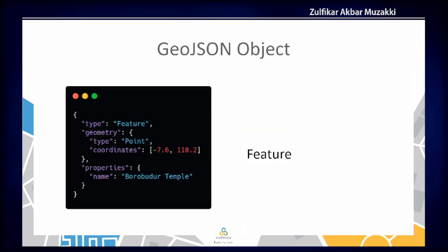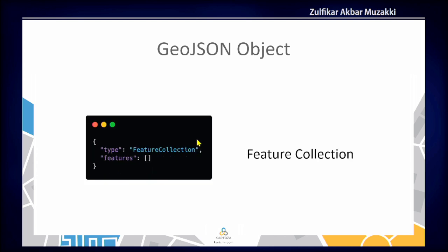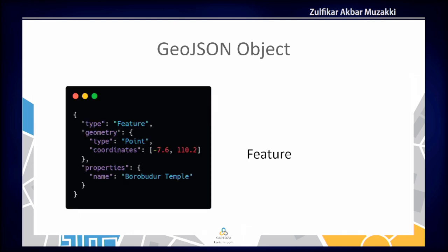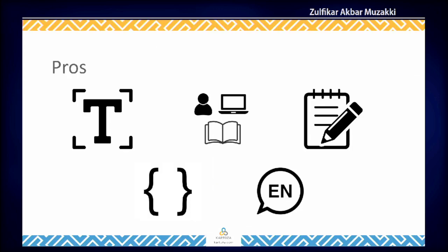Based on the type, GeoJSON is divided into two. The first one is Feature, which has a type keyword, then geometry and properties — inside the properties you can put any keys that you want. The second is FeatureCollection, which as its name suggests is a list or collection of features, and it has two keywords: type and features.